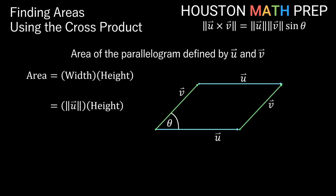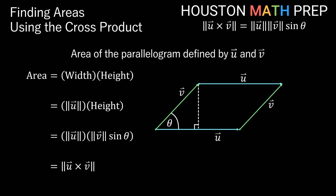When we talk about the height, we mean the height perpendicular to the base — not the slant height. Some basic right triangle trigonometry tells us that the height is actually equal to the magnitude of v times sine of theta. That would mean the area of the parallelogram is equal to the magnitude of u cross v, because magnitude of u times magnitude of v times sine of theta is the same as the magnitude of u cross v. So the area of a parallelogram is equal to the magnitude of the cross product of those vectors.